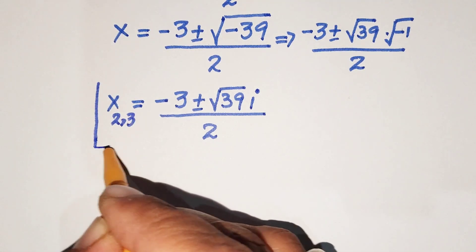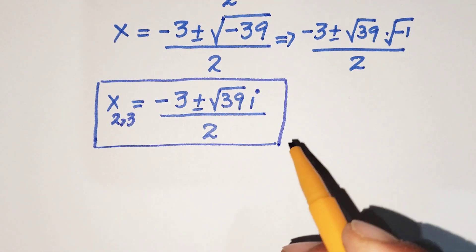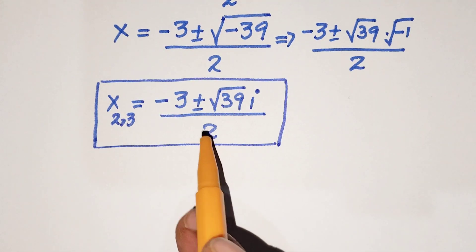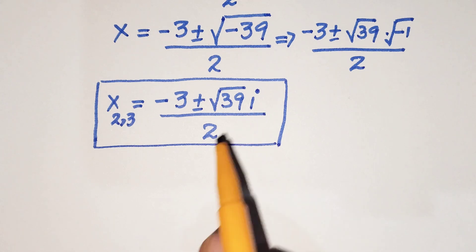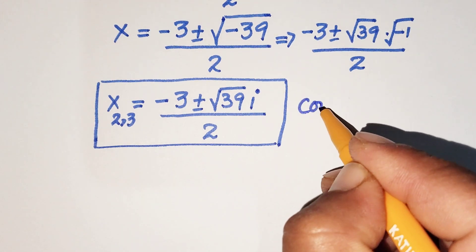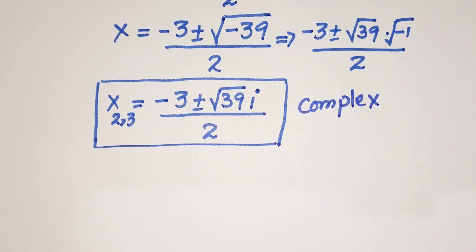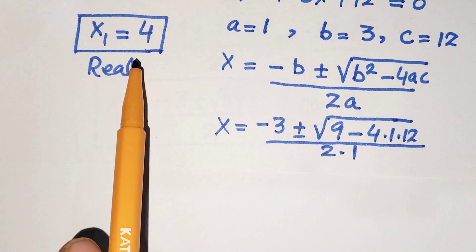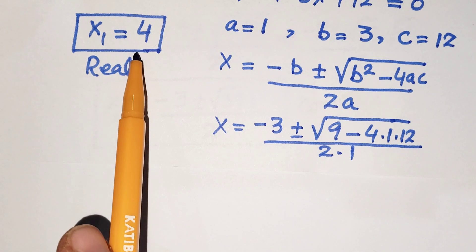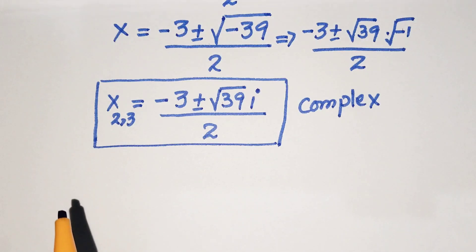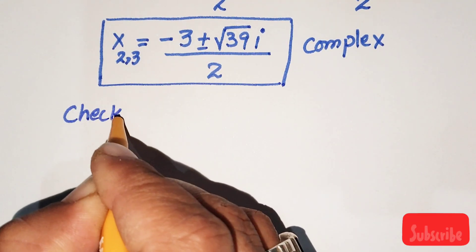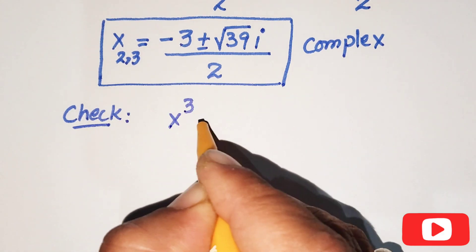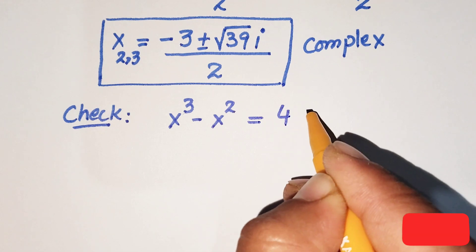So we have found two more values of x. The real part is negative 3 over 2, and the imaginary part is plus or minus (square root of 39 over 2) times i, giving us complex solutions. Our first real solution is x₁ equals 4, and we will now verify this in the original problem.